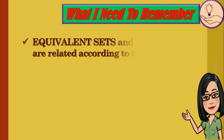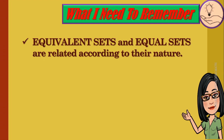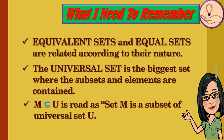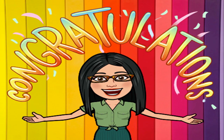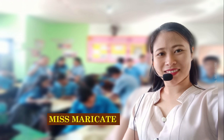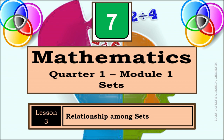Here is what you need to remember: equivalent sets and equal sets are related according to their nature. The universal set is the biggest set where subsets and elements are contained. 'M subset U' is read as 'set M is a subset of universal set U.' You just finished lesson 3 of our first module. Get involved and keep on learning. Thank you.